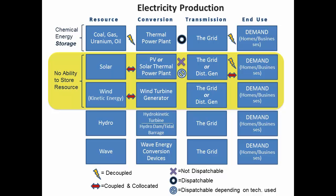Wind is very similar to solar — the resource is coupled and co-located to the conversion, and again it is not dispatchable. There's very little you can do to adjust the output, assuming you're trying to get as much energy out of it as possible for a given wind resource condition. It can either be connected to the grid or used in a distributed generation application, similar to solar.